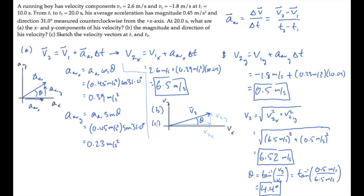Part C asks us to sketch the velocity vectors at the two times. We've already sketched the vector at the second time, so we just need to do it for the first one. At the initial time, the velocity components are 2.6 meters per second to the right and 1.8 meters per second down in the negative y direction, so the velocity vector v1 looks like this. The change in these velocity vectors going from the first to the second is shown here, and that equals the average acceleration multiplied by the change in time.